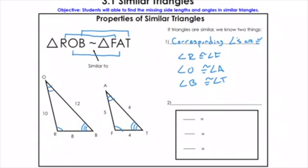Big fact number one — you've got to remember this: if two triangles are similar, the corresponding angles are congruent, so all of these angles are the same and they match up to each other. Don't forget the order of these letters matters. This little squiggly line right here means similar. So when I see triangle ROB and that squiggly line and then triangle FAT, that's telling me they're similar.